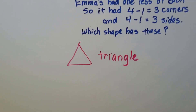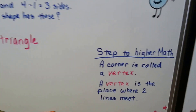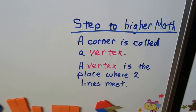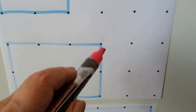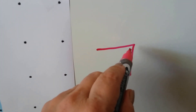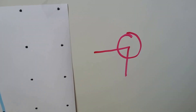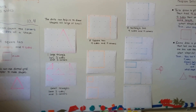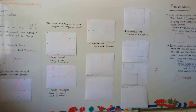For those of you who can handle it, here is a step to higher math. A corner is called a vertex, and a vertex is the place where two lines meet. Look — this line is meeting this line right at the corner, so that corner is also called a vertex. That's for those of you who can handle taking another step up. You're going to learn about that in the next few years, but now you can say you've heard of the word vertex. You can call it corner for now — you're just in second grade.